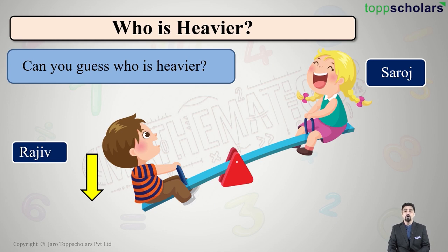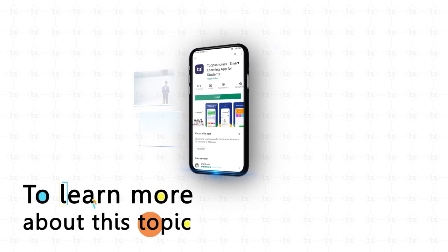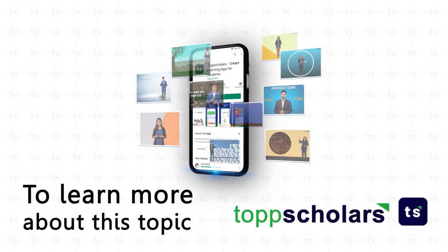So Rajeev is heavier than Saroj. The concept to remember: the side which is heavier will go down, and the side which is lighter will come up on a seesaw. To learn more about this topic, download the Top Scholars app.